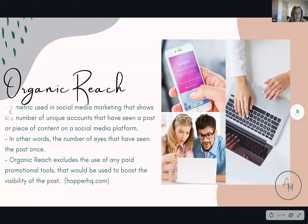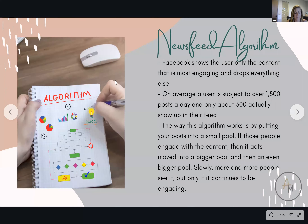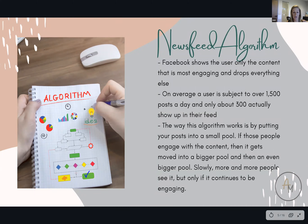When we talk about the algorithm that I'm always talking about, basically what the algorithm is: Facebook shows any individual user only the content that is most engaging and drops everything else. On average, a user goes onto Facebook and during the day they're subject to over 1,500 posts from other people — usually more, but that's the average that could come up in your feed every single day.